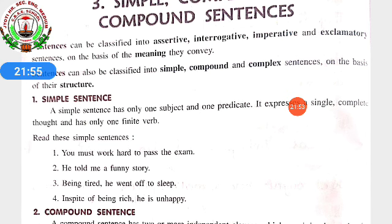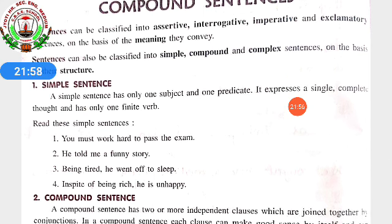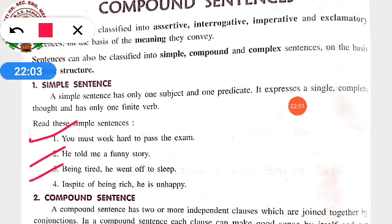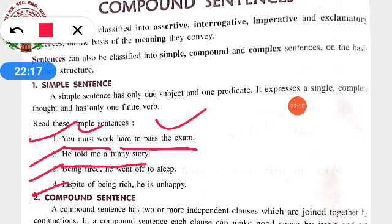Some examples of simple sentences from the book: 'You must work hard to pass the exam.' Here 'you must work hard' is the subject part and 'to pass the exam' is the predicate. Other examples: 'He told me a funny story.' 'Being tired, he went off to sleep.' 'In spite of being rich, he is unhappy.' These are all simple sentences — each has one subject, one predicate, and a complete thought with one finite verb.